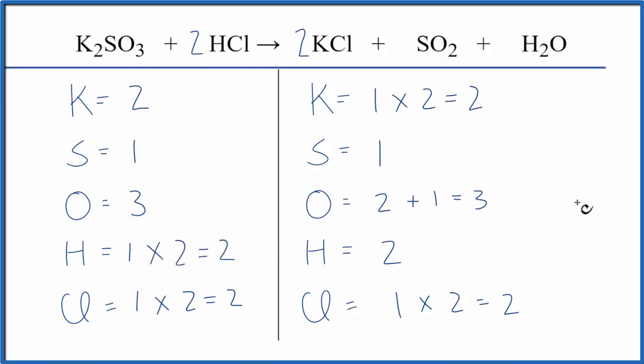So now everything's the same on each side of the equation. This equation is balanced. One place people have problems is they'll count these two oxygens, and then they'll forget about this one. So make sure you count all of the oxygens here on the product side of the equation.